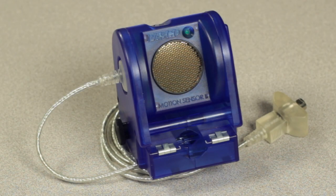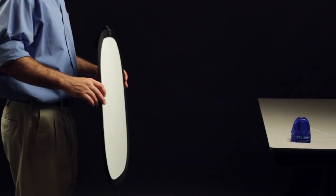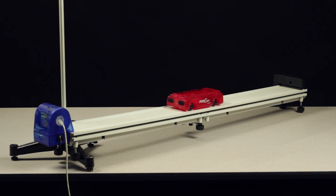The PASCO PS2103A motion sensor is used to measure and record the position, velocity and acceleration of large and small objects moving in one dimension toward or away from it.